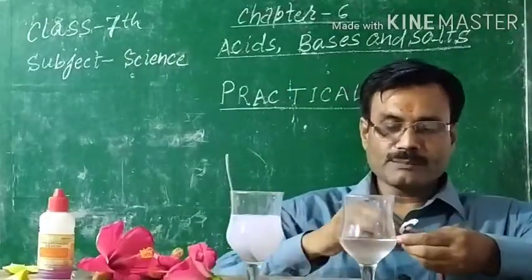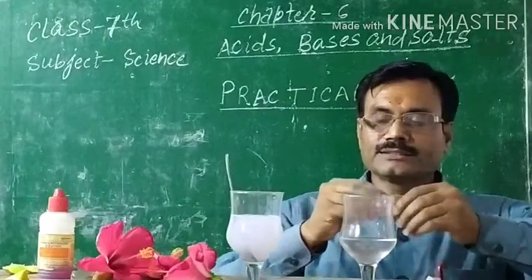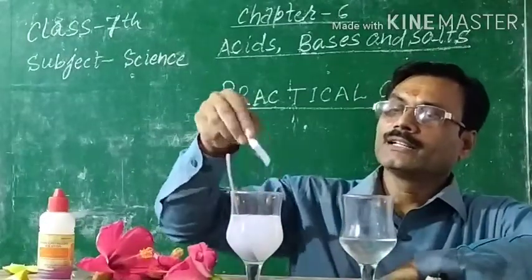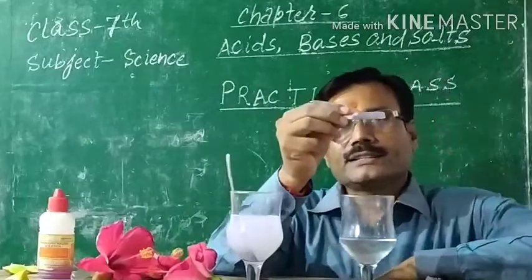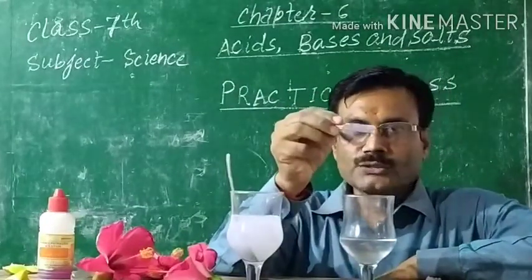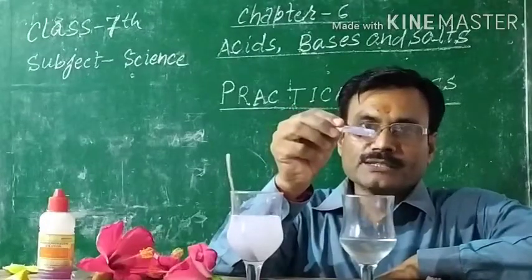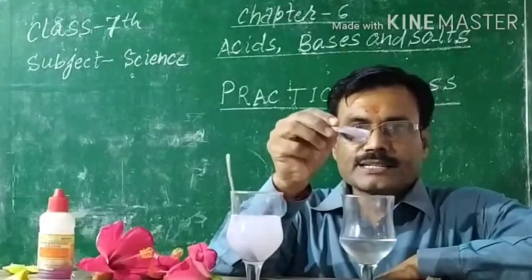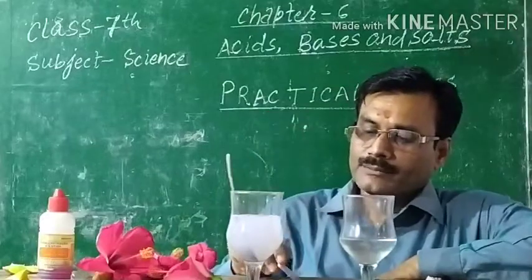But what happens with basic solution? Now you can see that in base, it changes into blue color. So, it shows that red litmus paper changes itself to blue in base.